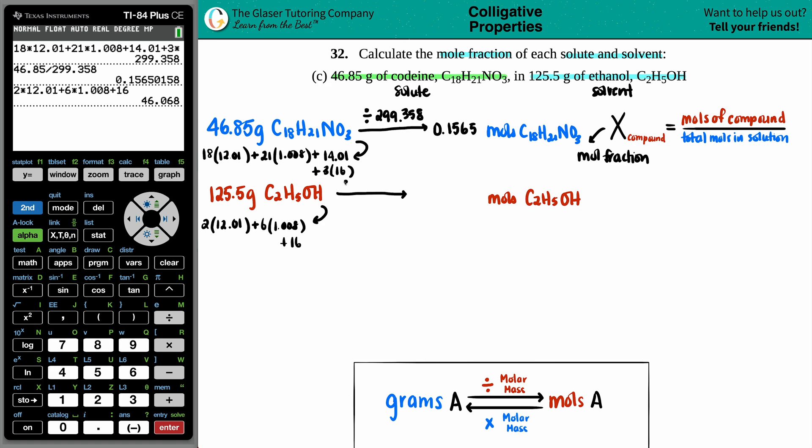So I'm just going to take the 125.5 and divide it by 46.068. 125.5 divided by that number, everything looks good to me. All right, we're on track, 2.724, that's good enough.